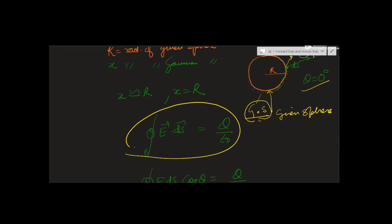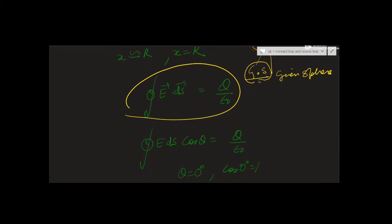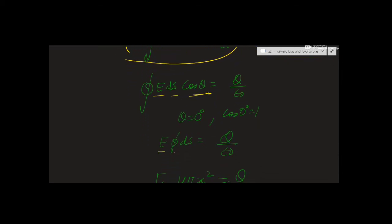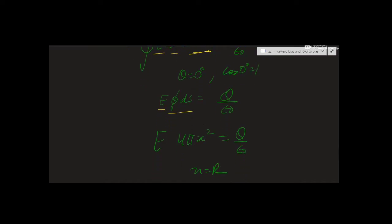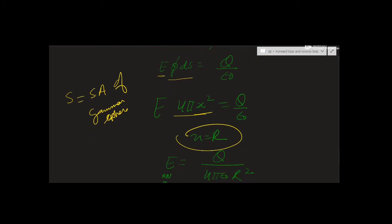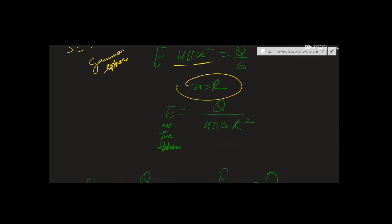Applying Gauss Law again: E·ds·cos(θ) = q/ε₀, with theta = 0. Integrating, E·S = q/ε₀, where S = 4πx². Since in this case x = R, substituting gives the electric field at the surface of the sphere.